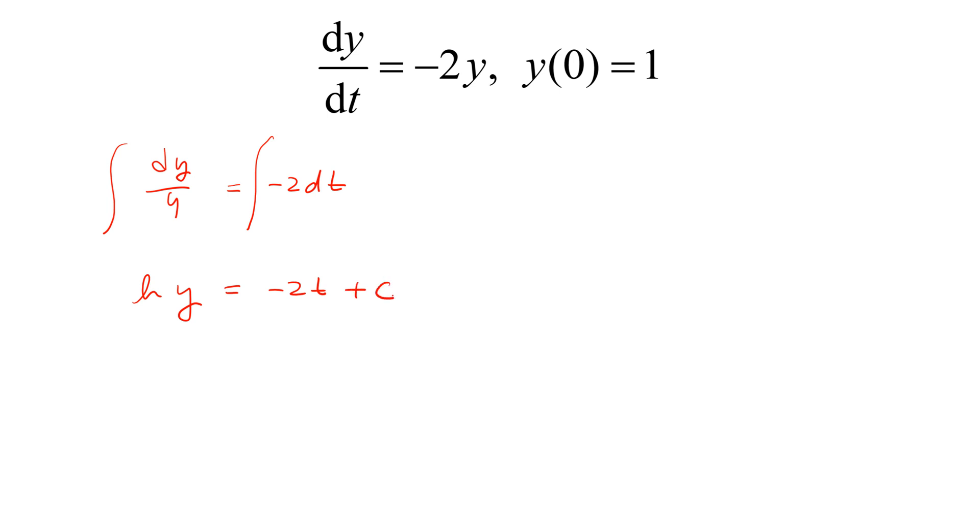c is an arbitrary constant. To express this equation for y, you will have y equals e to the power of minus 2t plus c, or y equals c1 e to the power of minus 2t. Again, c1 is an arbitrary constant.